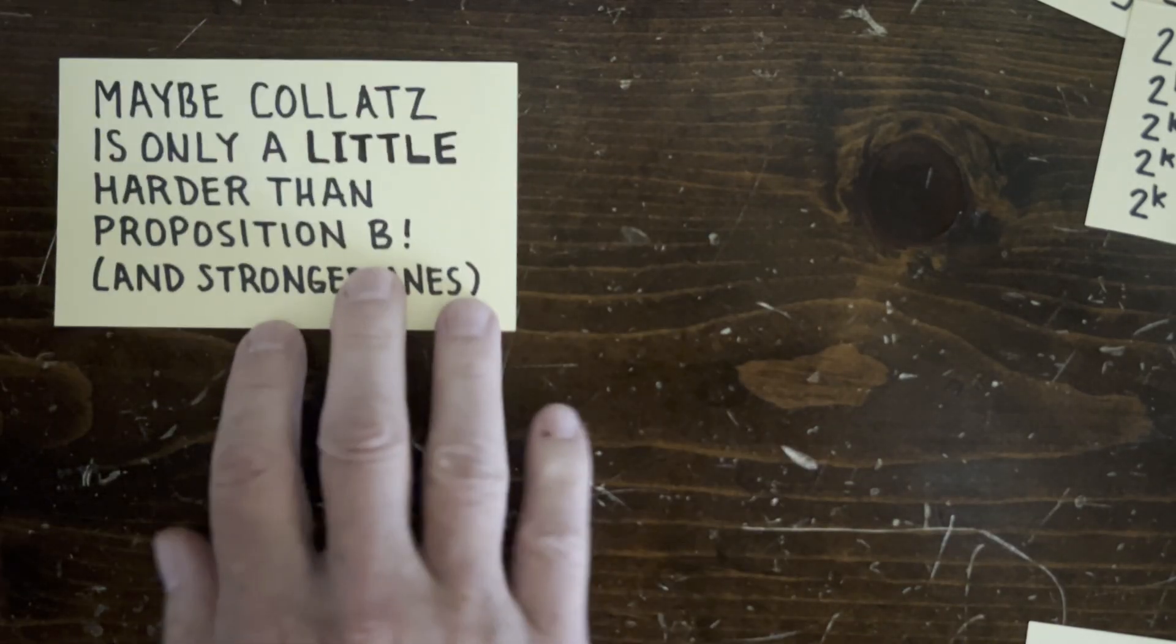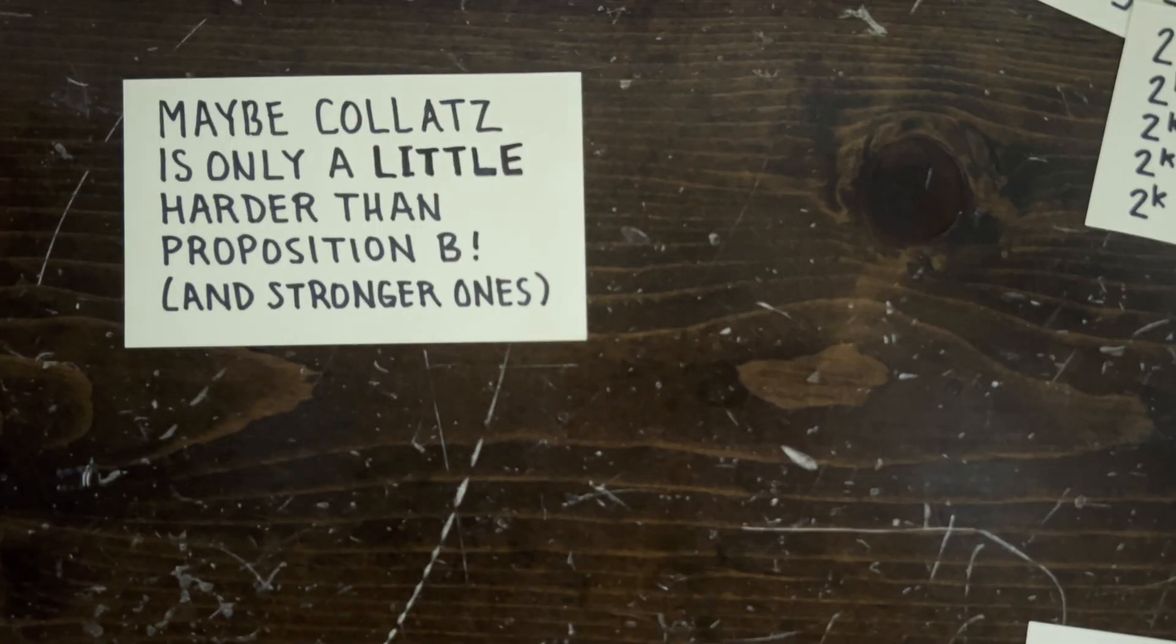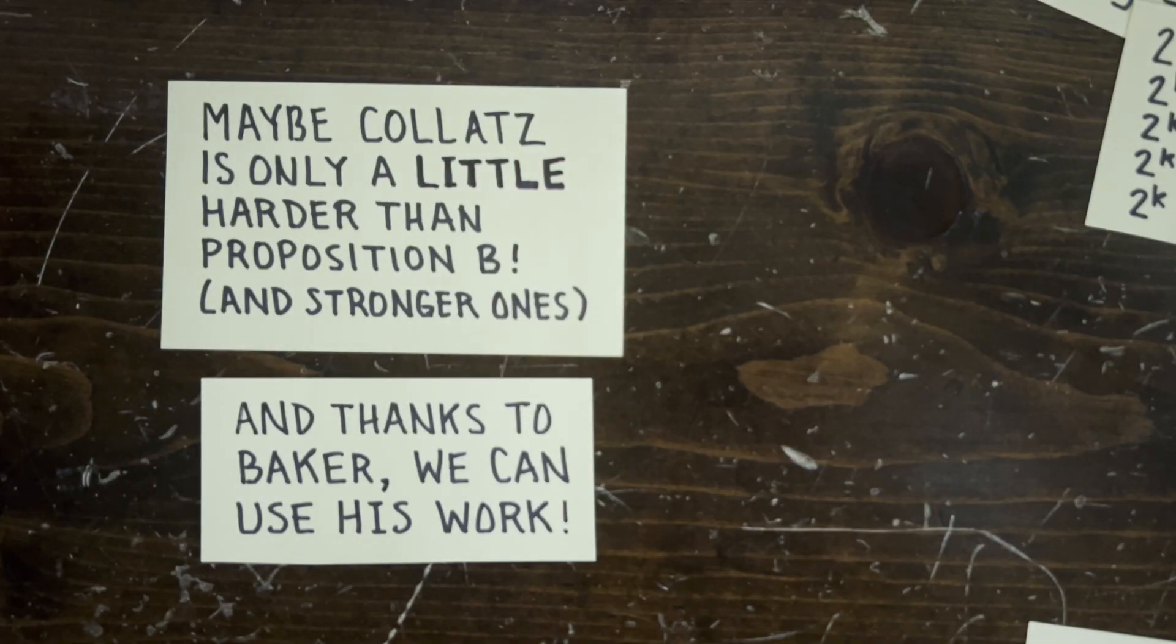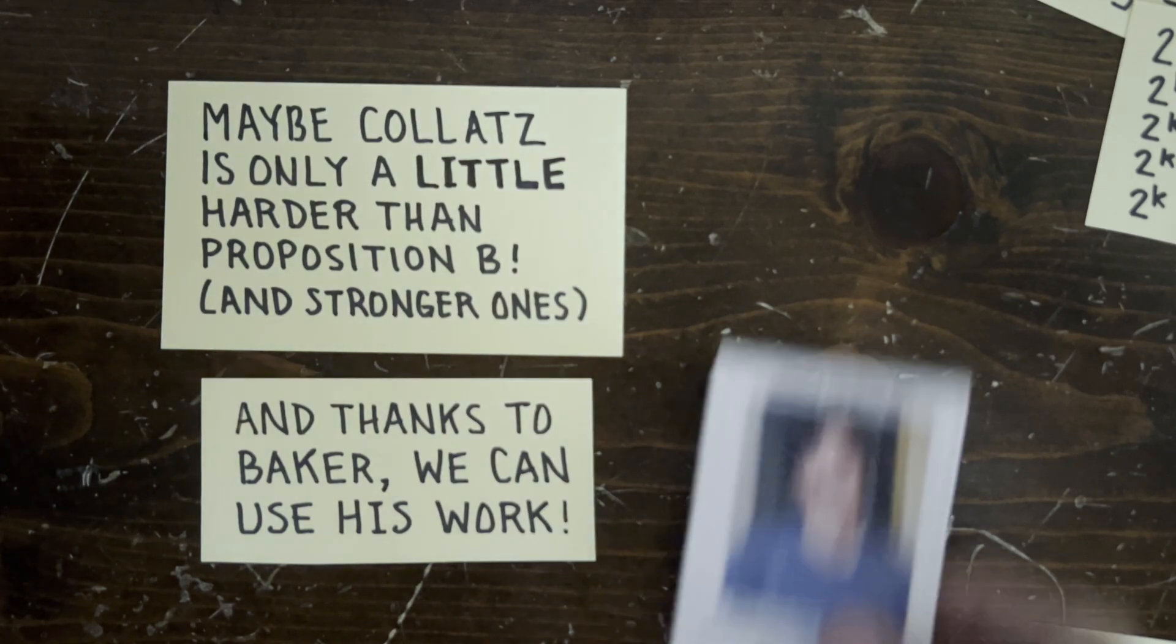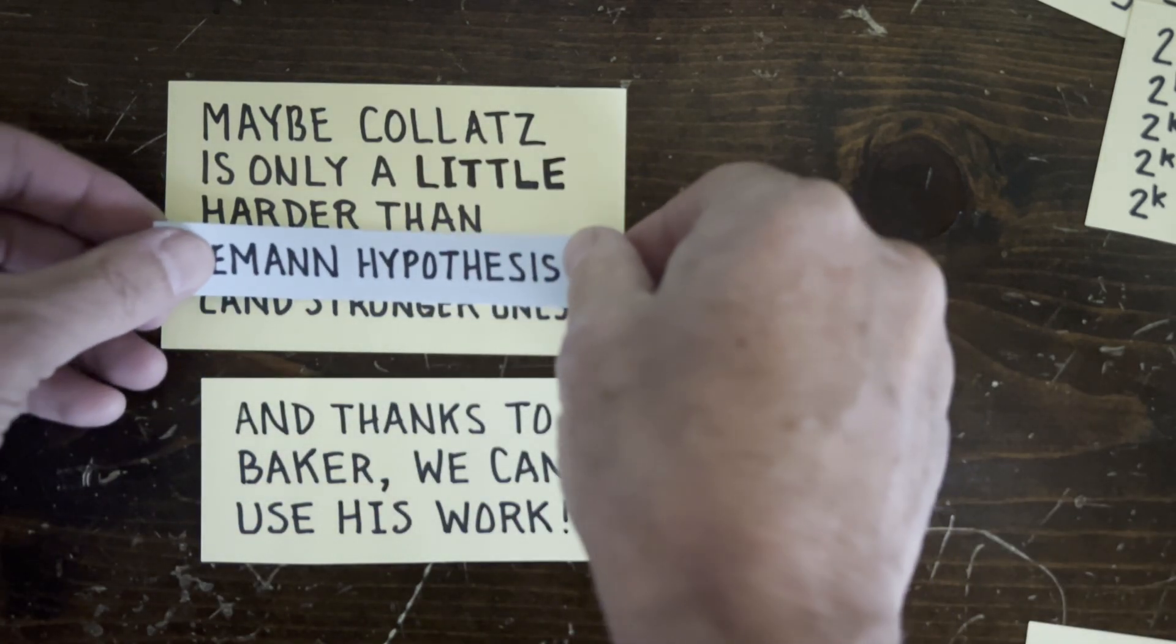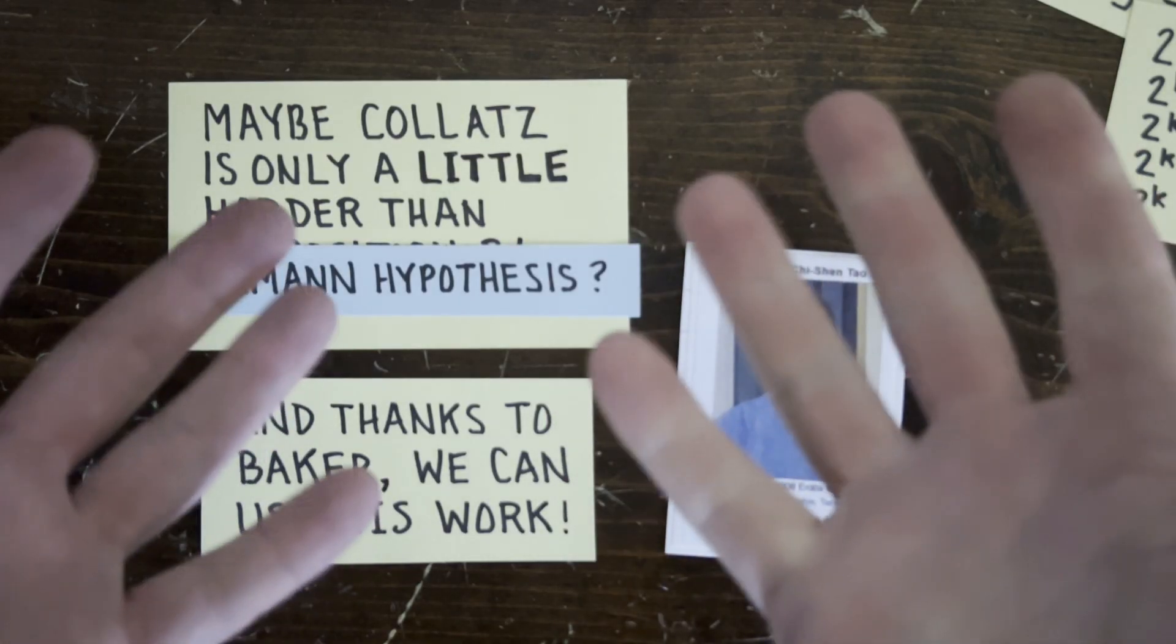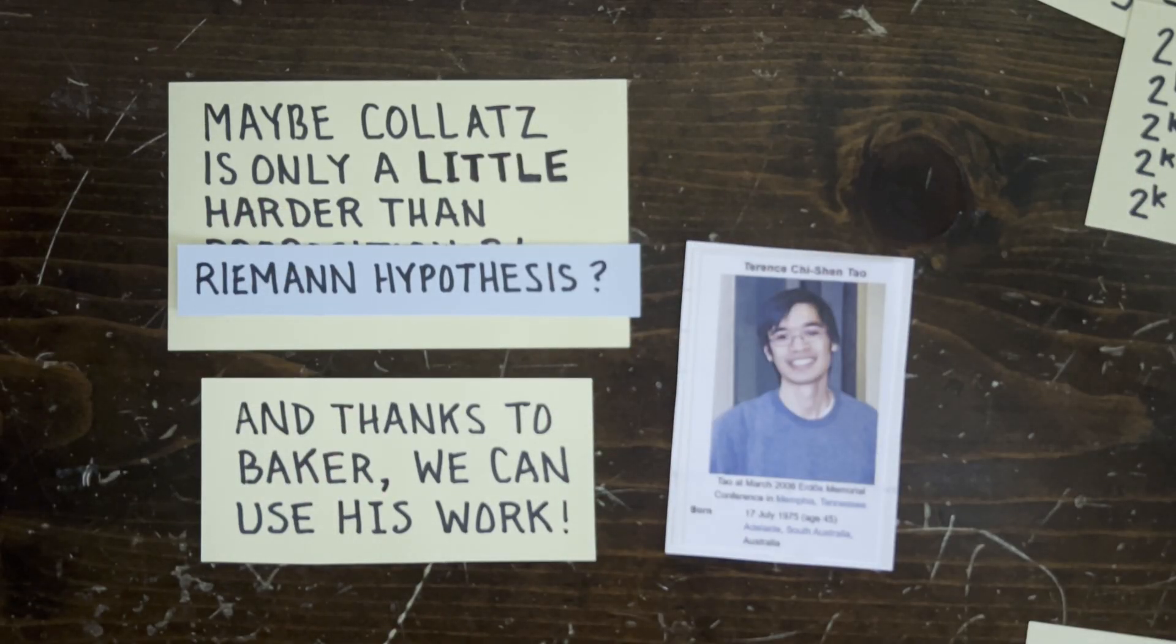Okay, now for some good news. Maybe proving the Collatz conjecture is only a little bit harder than proving proposition B. And since Baker already proved proposition B, maybe we could just use Baker's result in our Collatz proof. So that's good. Now, if Tao had said that the Collatz conjecture was harder than proving the unsolved Riemann hypothesis, well, that'd be truly sobering news for a math kook, and I'd probably just quit. But he didn't, and so I won't. Okay, see you next time.